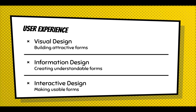Visual design is about building attractive forms — make a form appealing to fill out, visually easy to understand. That leads into information design: creating understandable forms where people know what's expected of them. Interactive design is a layer to make your forms more usable — how your validation works, how you respond when people check off a certain box, how you interact with the user as they're filling out the form.